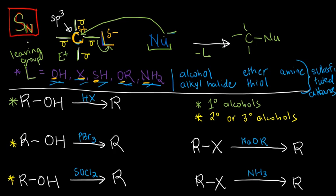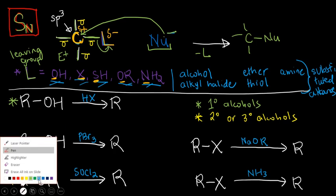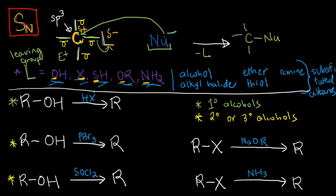And the SN reaction is a powerful type of mechanism because it allows us to interconvert a lot of these substituted alkanes from one to another. Let's say I have an alcohol and I use the simple reagent HX. The X can easily substitute the OH and we will get an RX. Done.